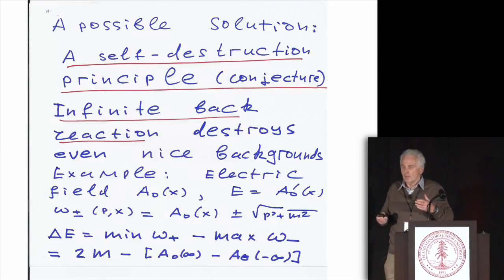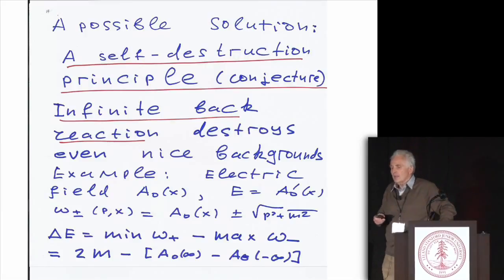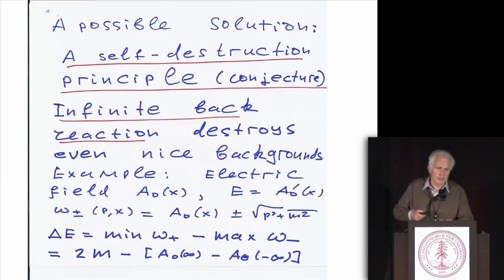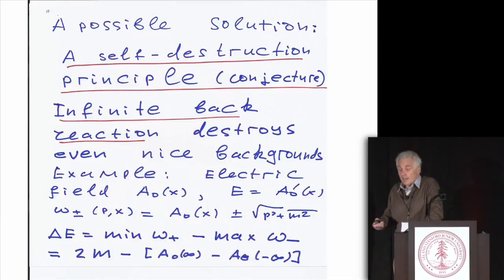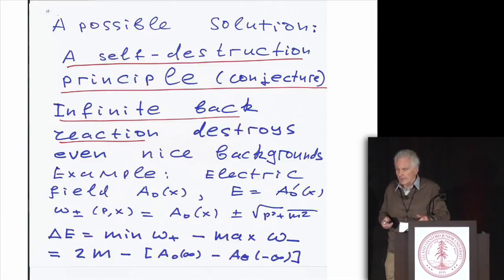Namely, I will conjecture that there are spacetimes or backgrounds, more generally not necessarily geometrical, which are classically fine. No singularities, everything reasonable. However, when you calculate back reaction on those manifolds, you will get an infinite answer. And I will start with a very simple example.